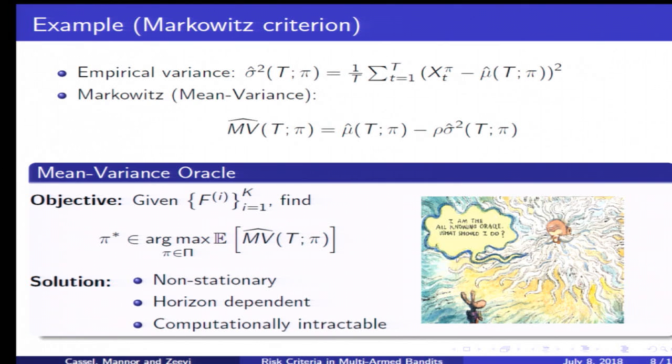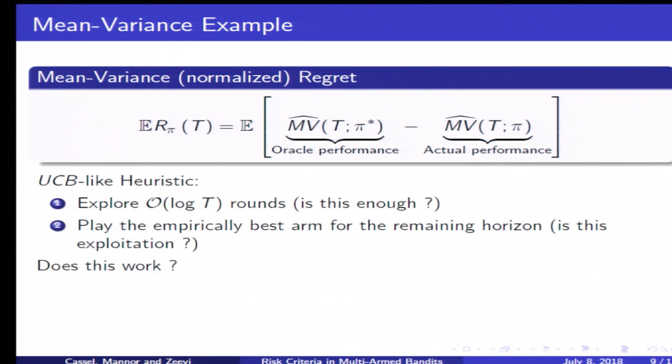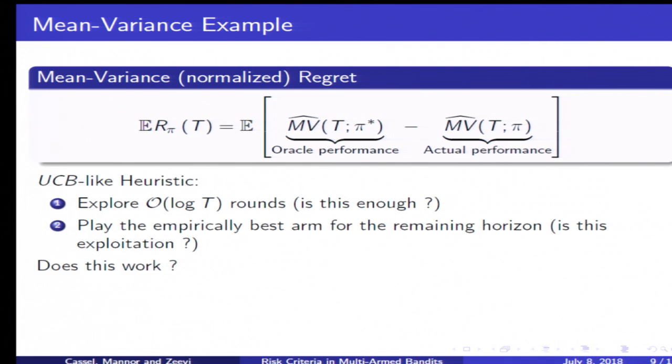The oracle is not really known at this point, but nonetheless we want to consider the notion of regret. Now we compare the performance of the oracle with our policy where the oracle performance is not really known anymore. In this case, as a first attempt you may consider a heuristic, a UCB type heuristic in which we first explore for around log t rounds, then for the remaining rounds we exploit by choosing the arm with the highest empirical mean variance that we have observed.